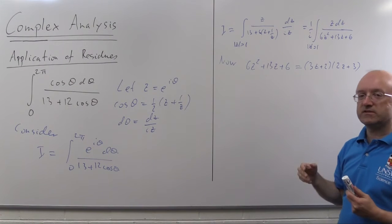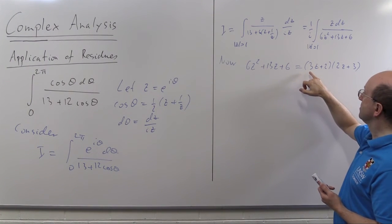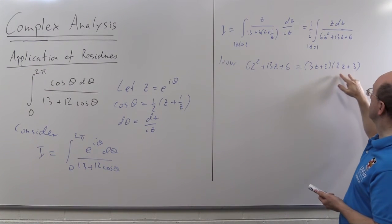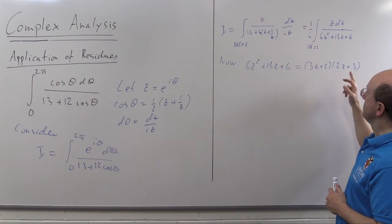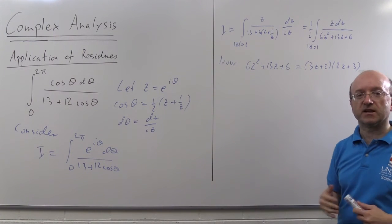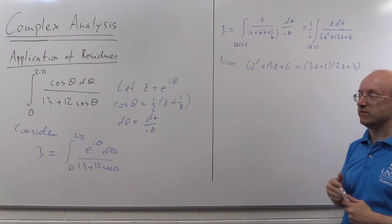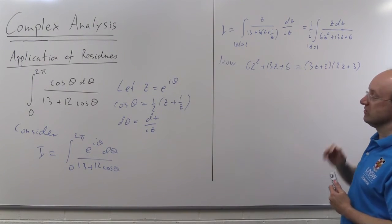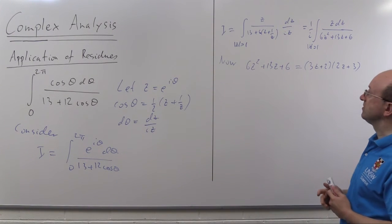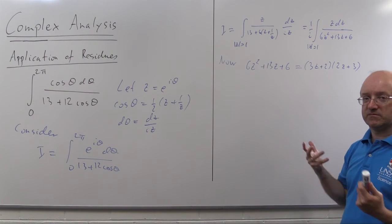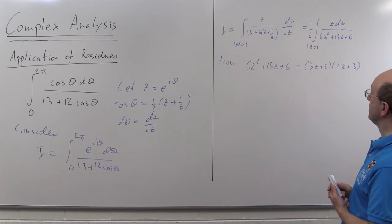So we can see that the denominator has two singularities, one at z is minus 2 thirds, and one here at z is minus 3 halves. Now z is minus 3 halves is outside the contour, so according to the residue theorem, we don't care what the residue is there. We only need the residue at minus 2 thirds. This is pretty much typical for these sorts of questions. You'll find some singularities in, typically only one, and the other singularity will be outside.